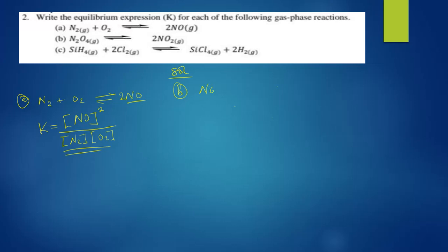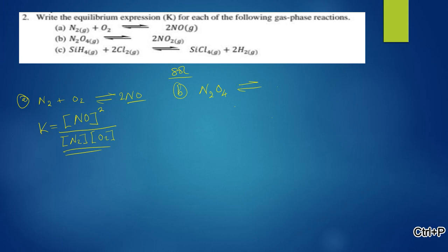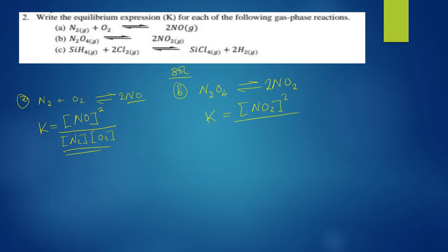For part (b), we have nitrogen tetroxide in a reversible reaction decomposing to form nitrogen dioxide. The equilibrium expression is K equals the concentration of nitrogen dioxide raised to the power two, over the concentration of the reactant nitrogen tetroxide. Products go on top over reactants.